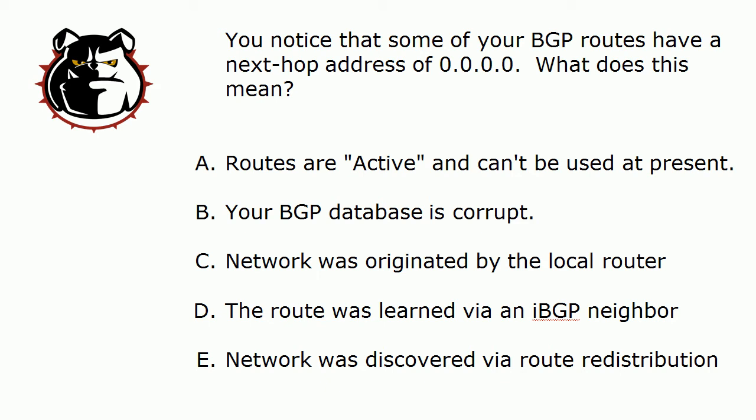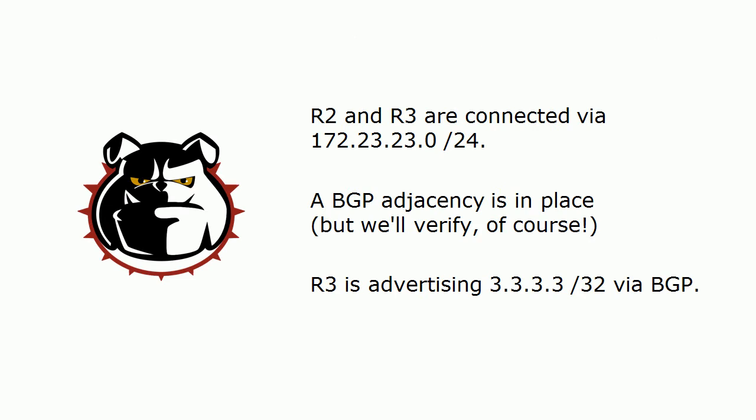As always, even if you think you know the answer, stick around for the lab because we've got some extra info there for you. You might want to jot this down: Routers 2 and 3, the ones we're going to use in today's lab, are connected via the 172.23.23.0/24 network. A BGP adjacency is already in place between the two routers over that network. Router 3 is advertising a loopback — the all-threes network /32 — via BGP.